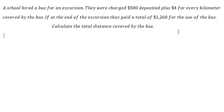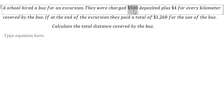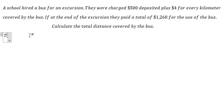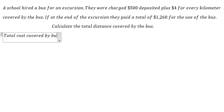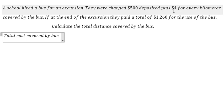Now I want to show you how to answer. The first thing we need to know is that we need to account for the 500 US dollar deposit at the beginning. We can find the total cost covered by the bus — that means after we pay the 500 deposit, we calculate: 1260 minus 500.